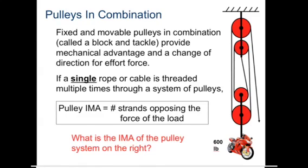Here's a term used in your practice problems and homework: block and tackle system. If a combination of pulleys are used, it's called a block and tackle system. The way you calculate the ideal mechanical advantage of a block and tackle system — this is important — only works if a single rope is threaded through it. If you have multiple ropes, this rule doesn't work. You count the number of strands supporting the load.